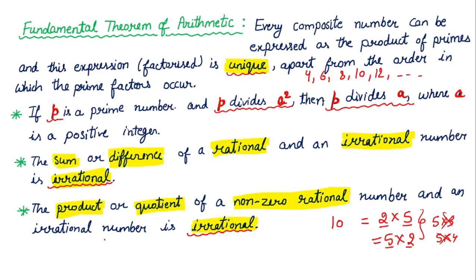What is the next point? If p is a prime number and p divides a squared, then p divides a, where a is a positive integer. If p is a prime number, then if a square is dividing, then p will also divide. This theorem is used in this theorem. We have to mention this point. This is a very important point.